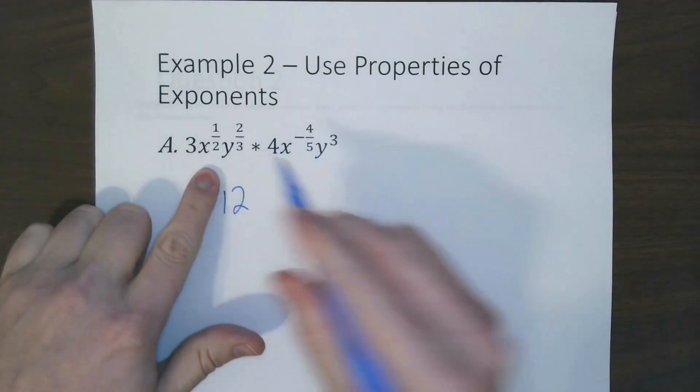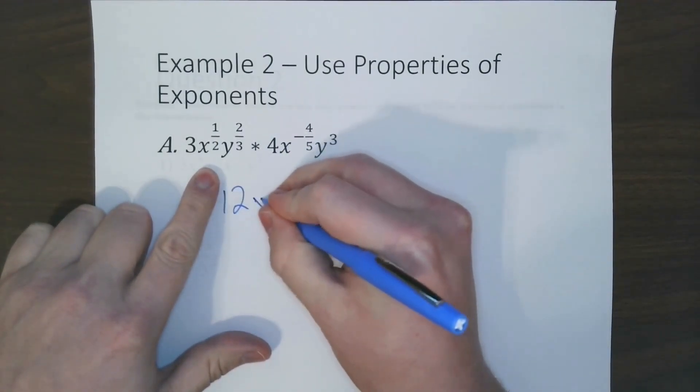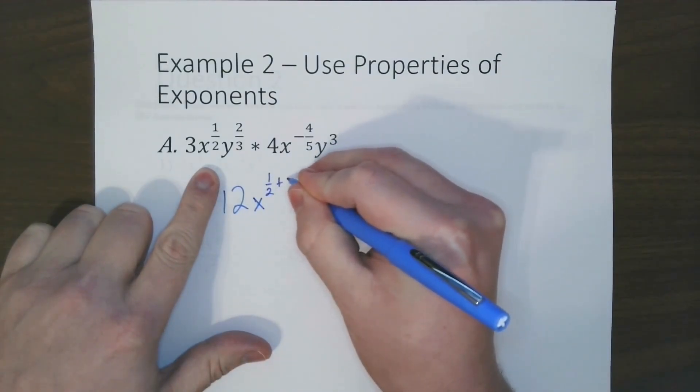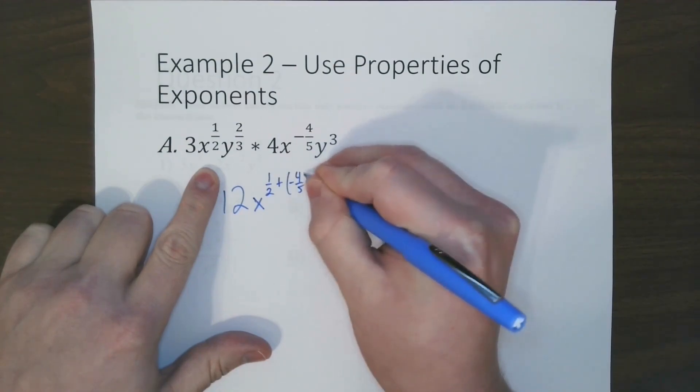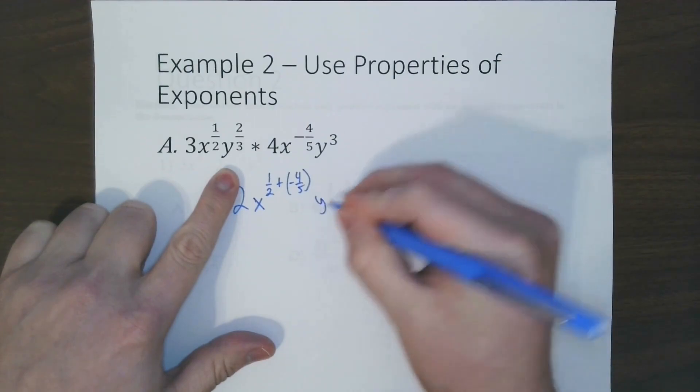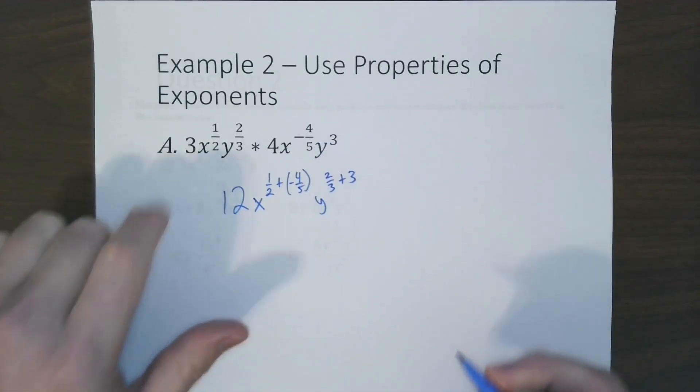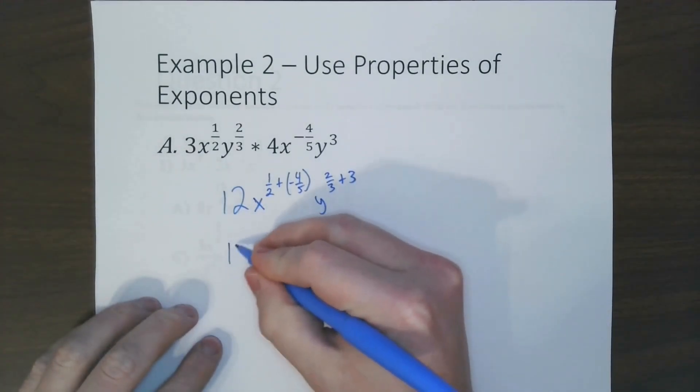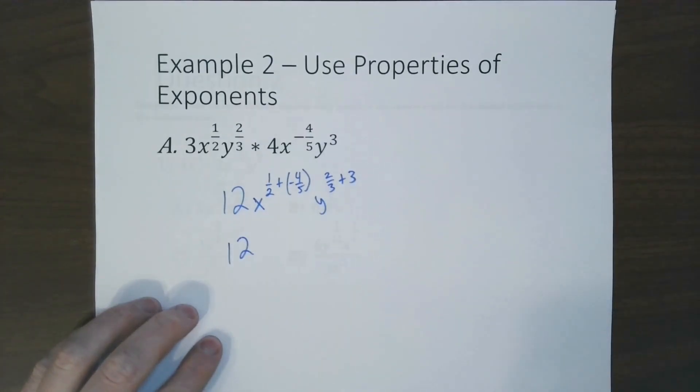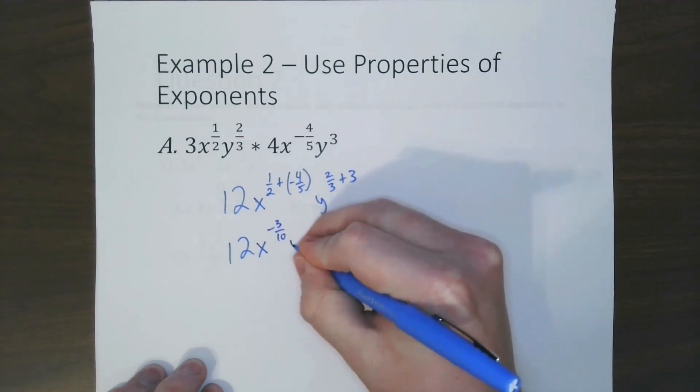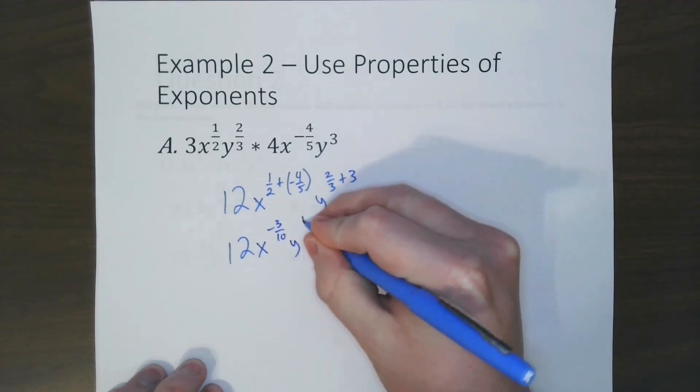With the x's, we're going to add those exponents. So x to the 1/2 plus negative 4/5, and then we're going to add the ones for the y. So y to the 2/3 plus 3. Now using a calculator or side math, we end up with 12, then x to the negative 3/10, y to the 11/3.